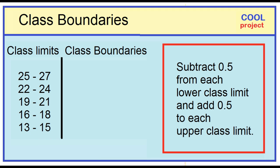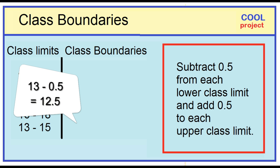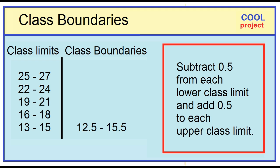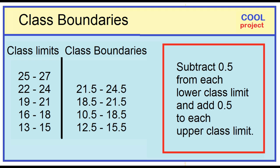Let's start from the lowest class interval. 13 minus 0.5 is 12.5. 15 plus 0.5 is 15.5. Next, 15.5 to 18.5. 18.5 to 21.5. 21.5 to 24.5. And 24.5 to 27.5.